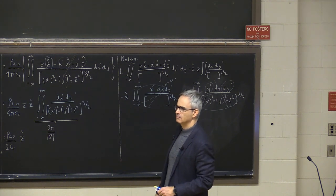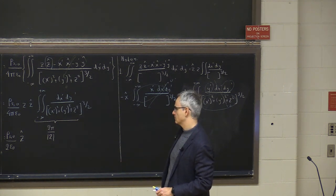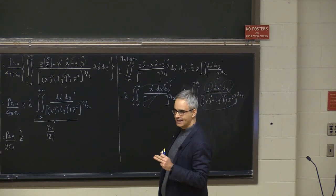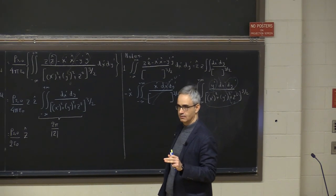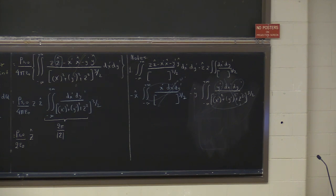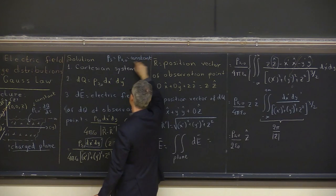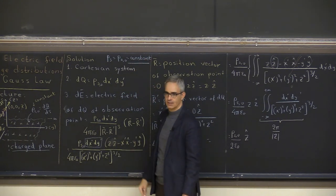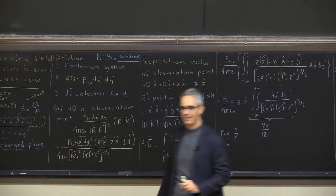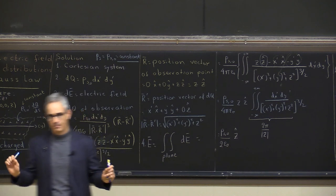A student asks why I wrote ρs,0 for the charge density. I use the subscript zero to emphasize that this surface charge density is a constant — for example, 5 nanocoulombs per meter squared or 1 nanocoulomb per meter squared — constant everywhere on the plane.